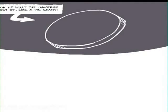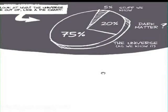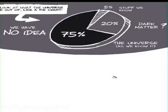So look at what the universe is made out of, like a pie chart. Five percent of it is stuff we know. Twenty percent of it, dark matter. Seventy-five percent of it, we have no idea.